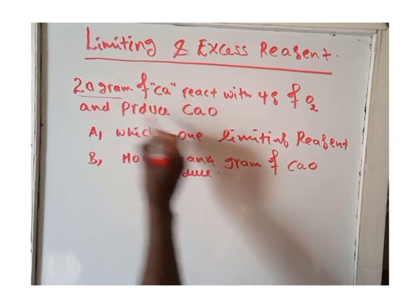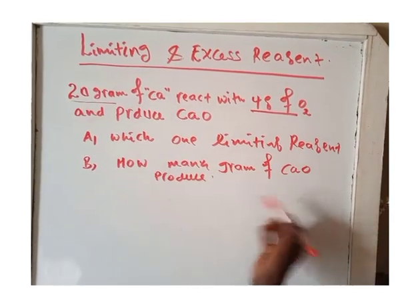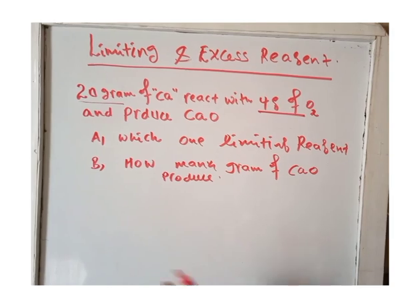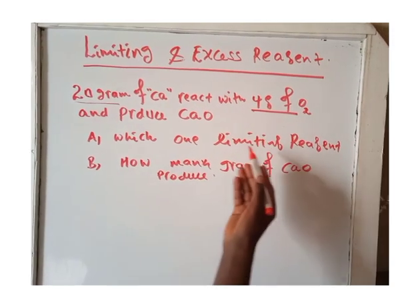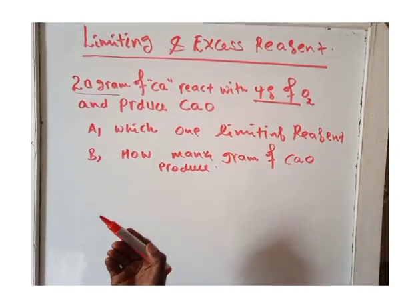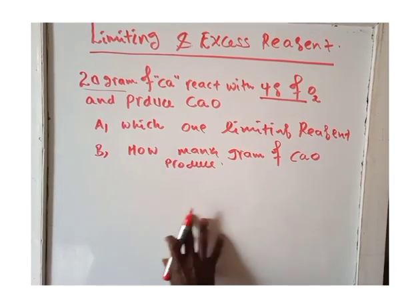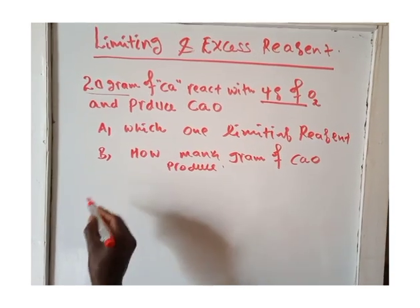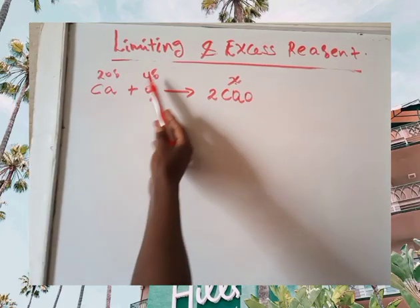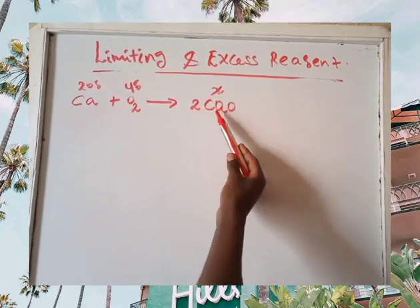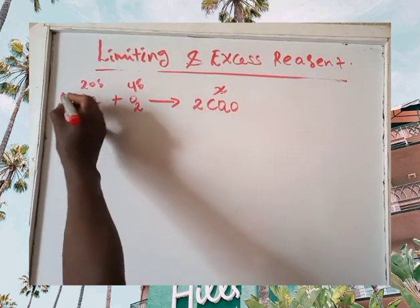How many grams of product will be produced? Which one is the limiting reagent and which one is the excess reagent? The amount of product produced depends on the mass of the limiting reagent. 20 grams of calcium metal reacts with 4 grams of oxygen to give 2 moles of calcium oxide. This equation is stoichiometrically balanced.